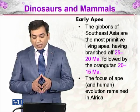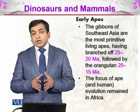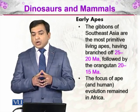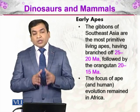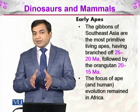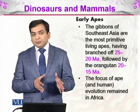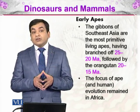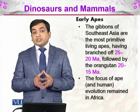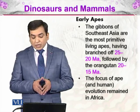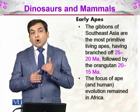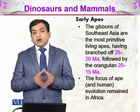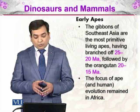The focus of ape and human evolution remained in Africa. The orangutans and gibbons of Southeast Asia were living differently and did not give rise to the human — they share only very distant ancestors with humans. All the ape and human evolution that happened was in the continent of Africa.